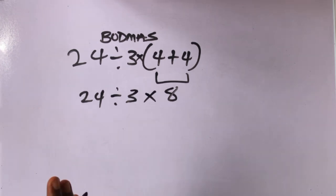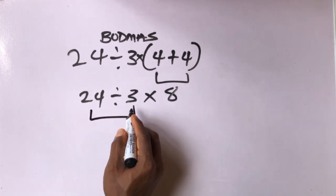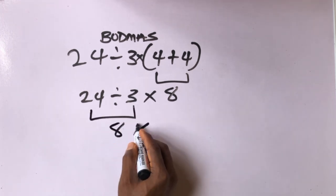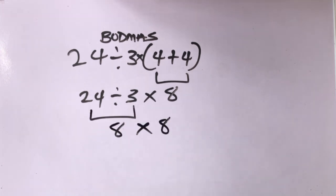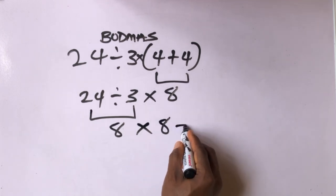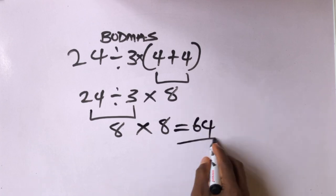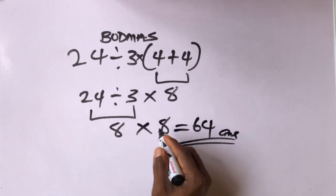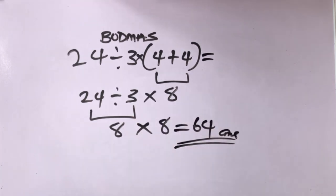So 24, first of all because division comes before multiplication, we have to first of all divide 24 by 3. 24 divided by 3 will give us 8 times this 8. 8 times 8 gives us 64. That's our final answer.